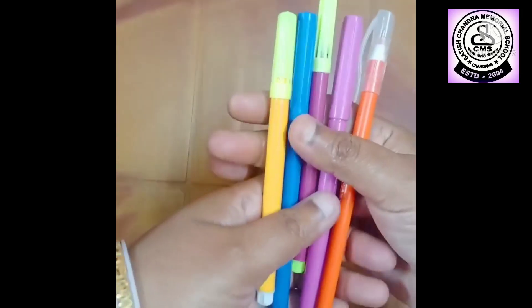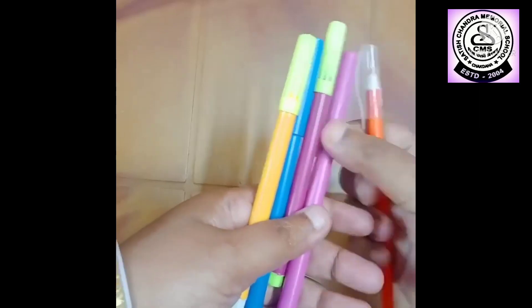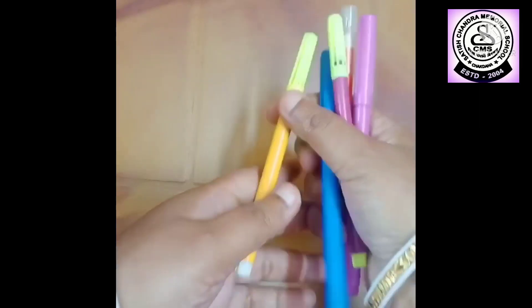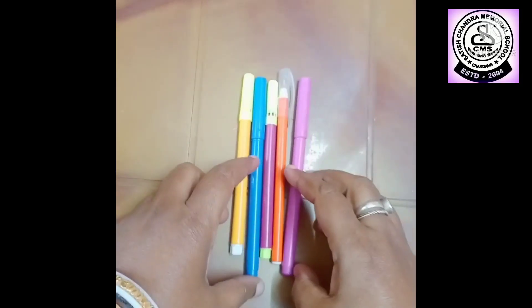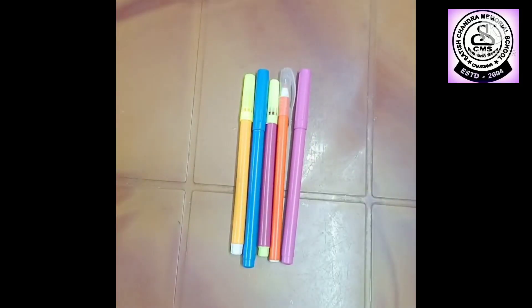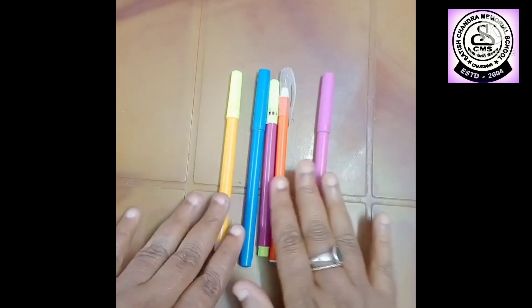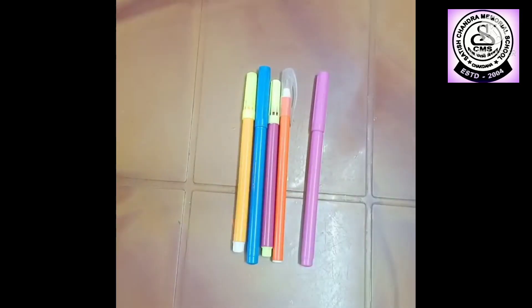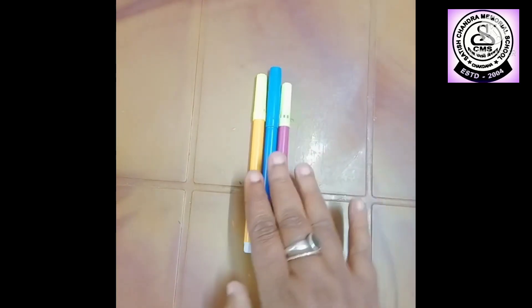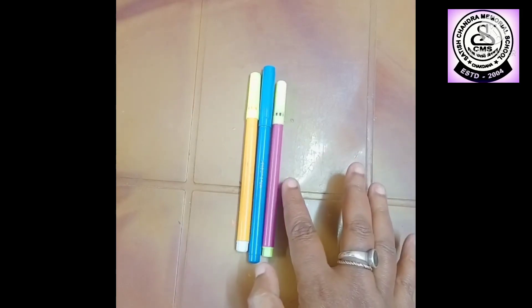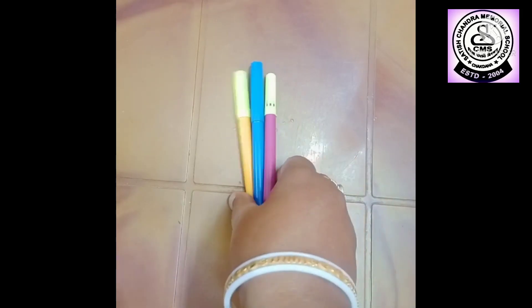So you already know how many sketch pens are here. 1, 2, 3, 4, 5. So what do you mean by subtraction? Subtraction means to take away. Here there are 5 sketch pens. If I give 2 sketch pens to your friend, how many are left? 1, 2, 3. In the same way, one more example.